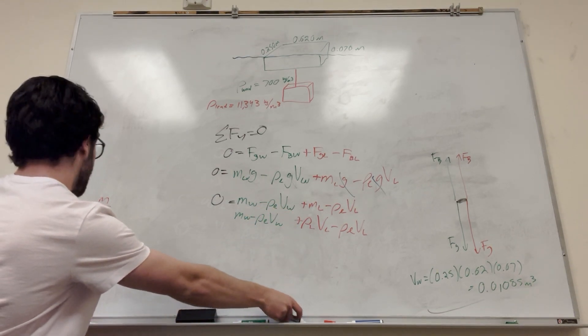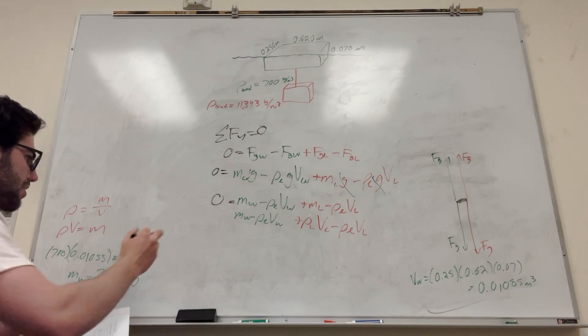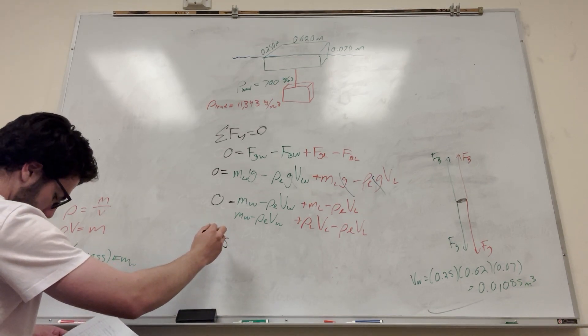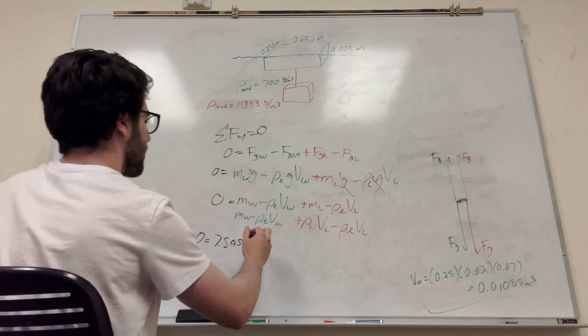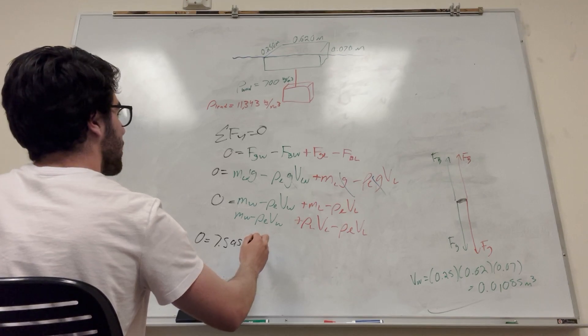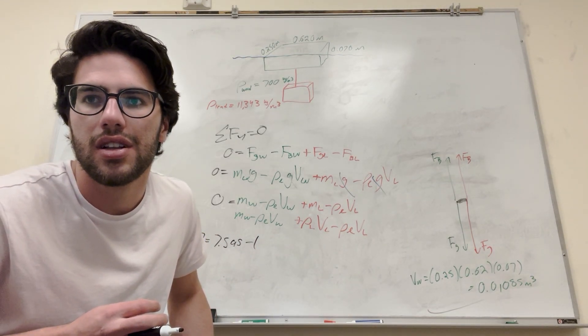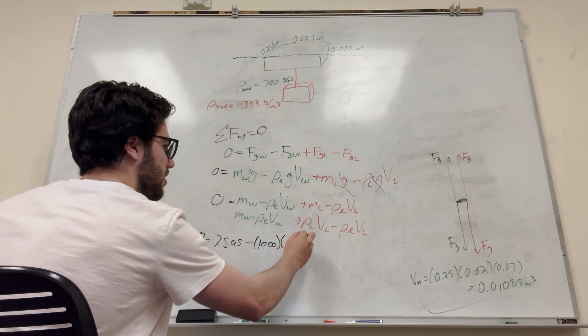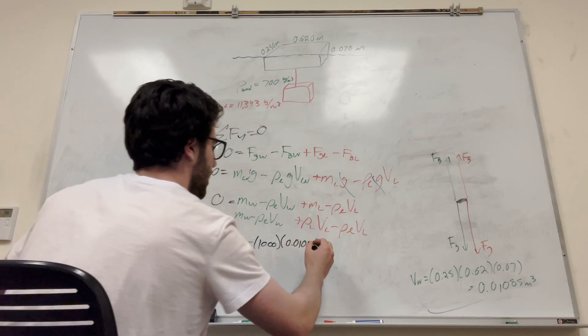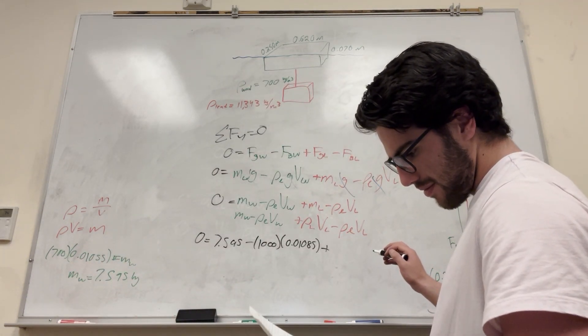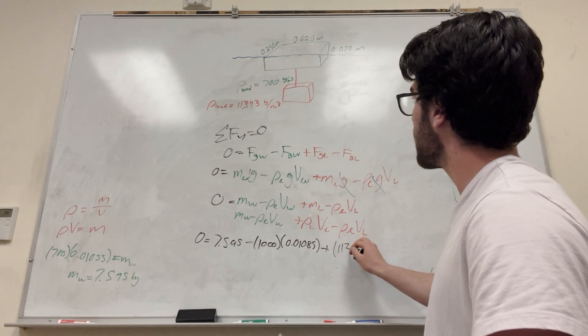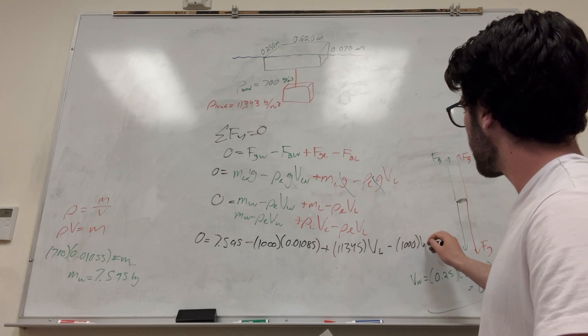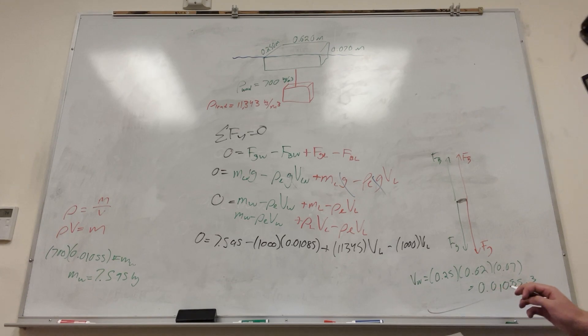So what we can do is we can plug in all these numbers, right? So 0 is equal to, so the mass of the wood, 7.5, it's the density of the liquid here. What are we in? We're in water, right? Just normal water. Yeah, just normal water. So density of water is 1,000 times the volume of the wood, which is 0.01085, and then plus the density of the lead, which you're going to get to be 11,345, times the volume of the lead, minus the density of the liquid, 1,000, volume of the lead.